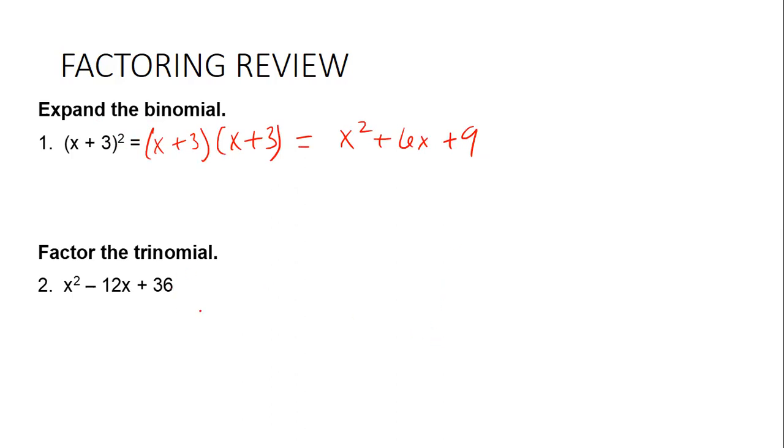All right. If it says factor the trinomial, what should I think about when I'm factoring the trinomial? What multiplies to get that and what adds to get that. Perfect. What multiplies to give me 36 but adds to give me negative 12. What does that?